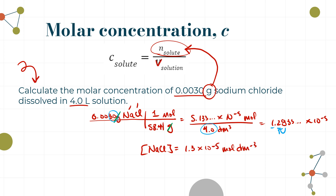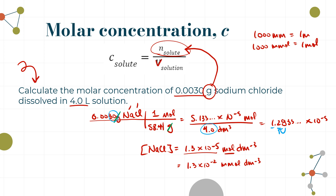That's a very small negative exponent, so instead of moles we can use millimoles — there are 1000 millimoles in one mole. Multiplying by 1000 gives 1.3 × 10⁻² mmol dm⁻³. Still a negative exponent, so we go one more: there are 1000 micromoles in one millimole, giving 130 micromoles per cubic decimeter — no messy negative exponents.